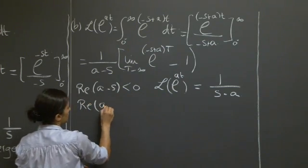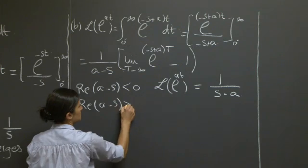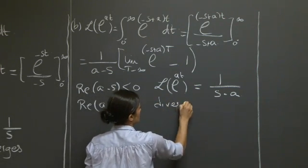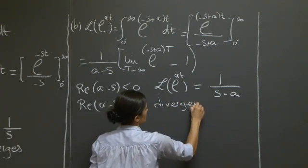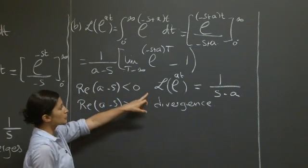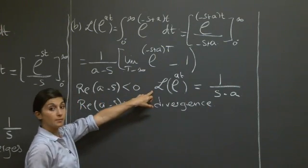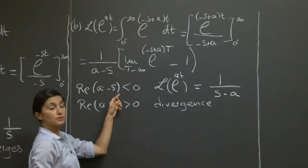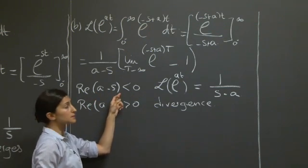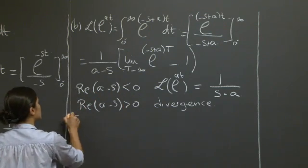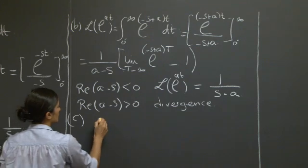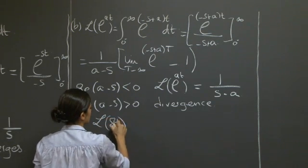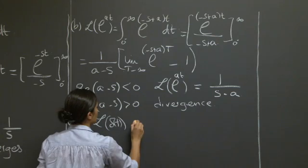If the real part is positive, then we have divergence. So the domain of convergence of this Laplace transform is defined by the real part of a less than the real part of s. Now let's do the last one — the Laplace transform of the delta function.